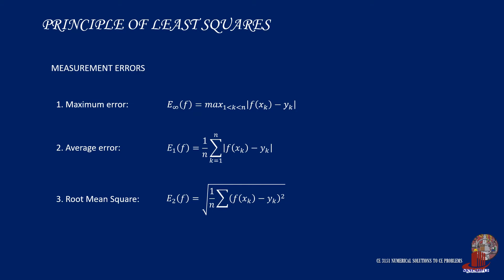For the principle of least squares, root mean square or RMS is used. This is denoted as E2 with the following formula.